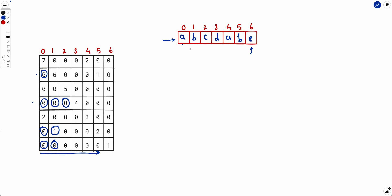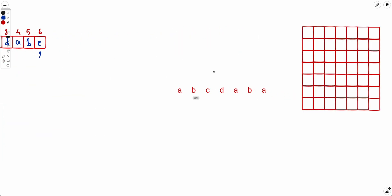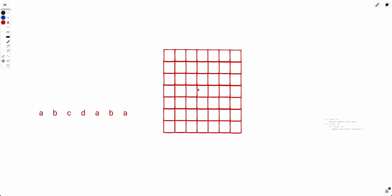So the next step is to take this string, calculate the LCP array again — the valid LCP matrix based on this string — and if that LCP matrix equals the given LCP matrix, then this is a valid string. Otherwise, there is no string possible. I'd strongly encourage you to pause the video and try to solve this sub-problem yourself, as it's a very standard problem.